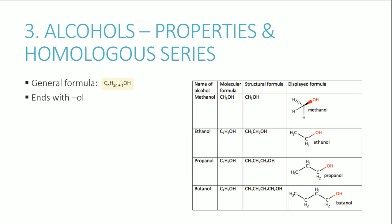Alcohols have a general formula of CₙH₂ₙ₊₁OH, where OH is the functional group. They all end with the name 'ol'. The homologous series starts with methanol (one carbon), and gradually lengthens to ethanol, propanol, and butanol — all sharing the same OH functional group attached to one of the carbons.